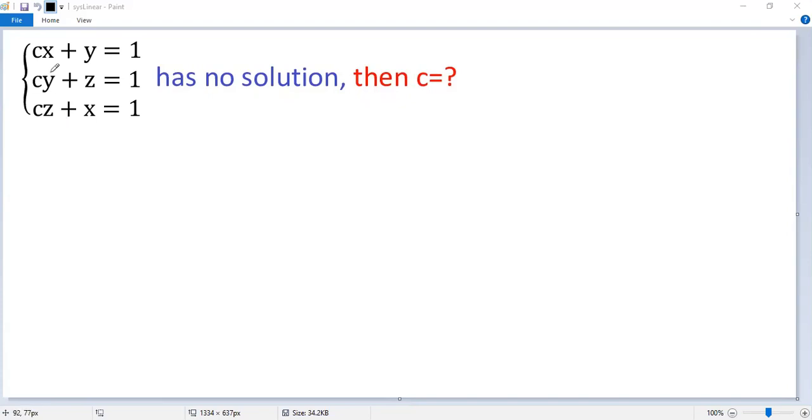For the left side, cx plus x, so we get c plus 1 times x. For y, cy plus y, so we get c plus 1 times y.